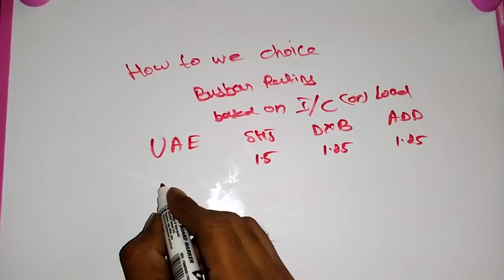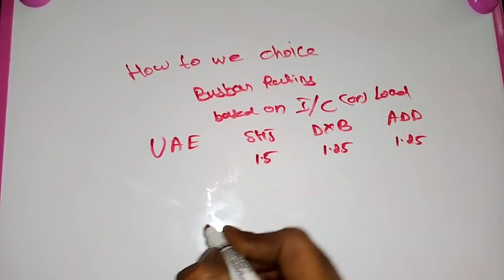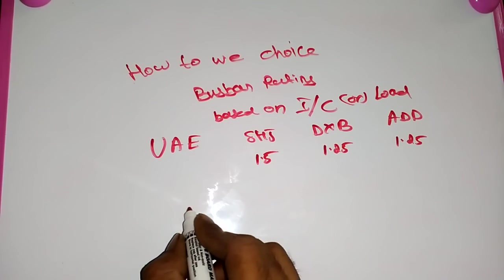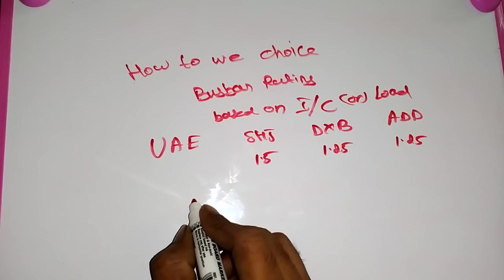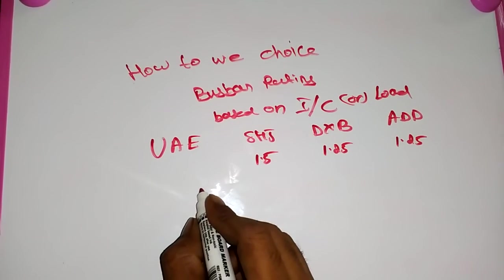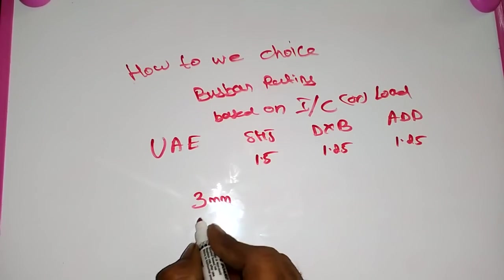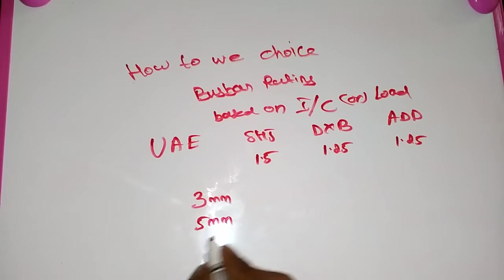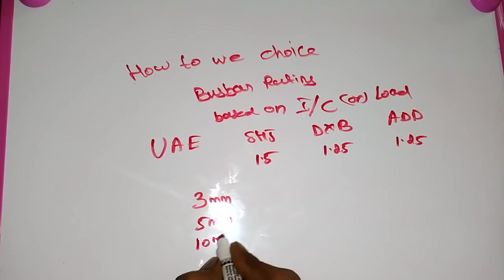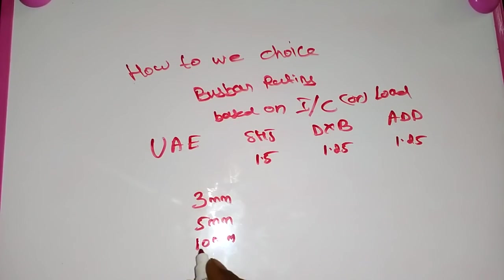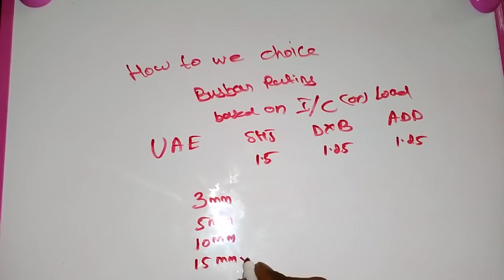First thing, we see some busbar rating. Mostly busbar will come for 3mm, 5mm, 10mm, and then 15mm. Mostly we are not used for 15mm, we use up to 10mm.